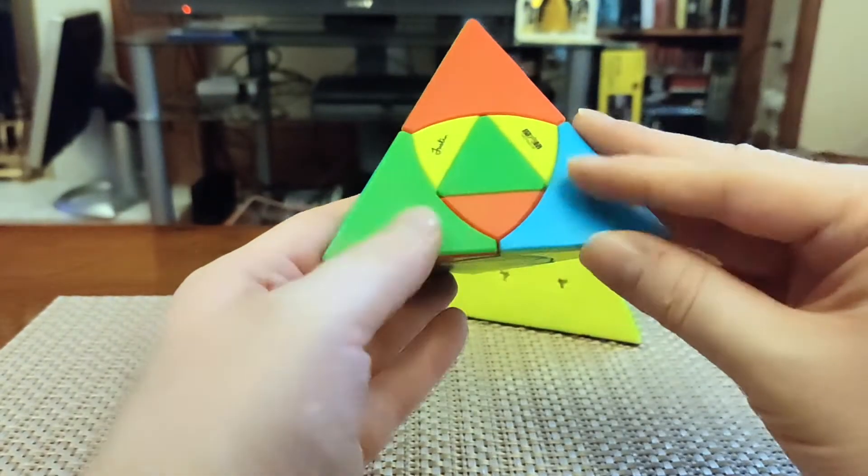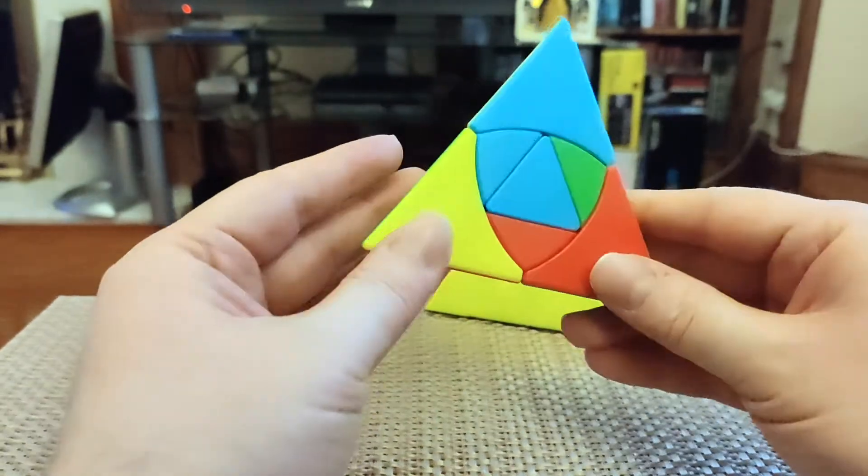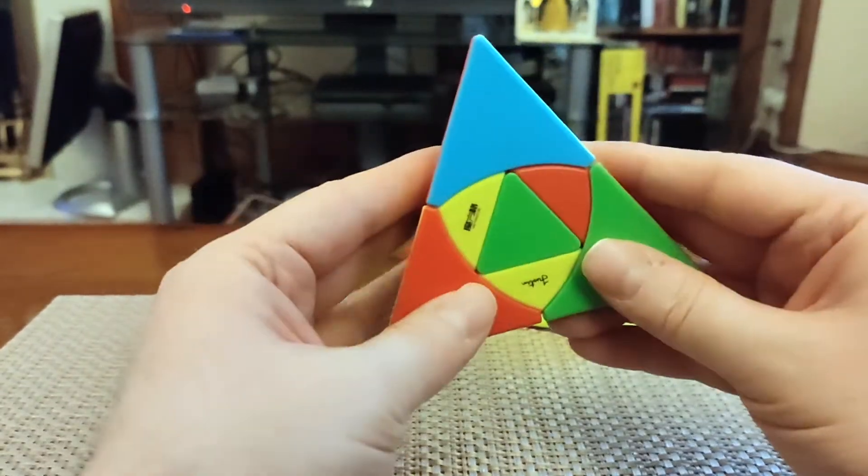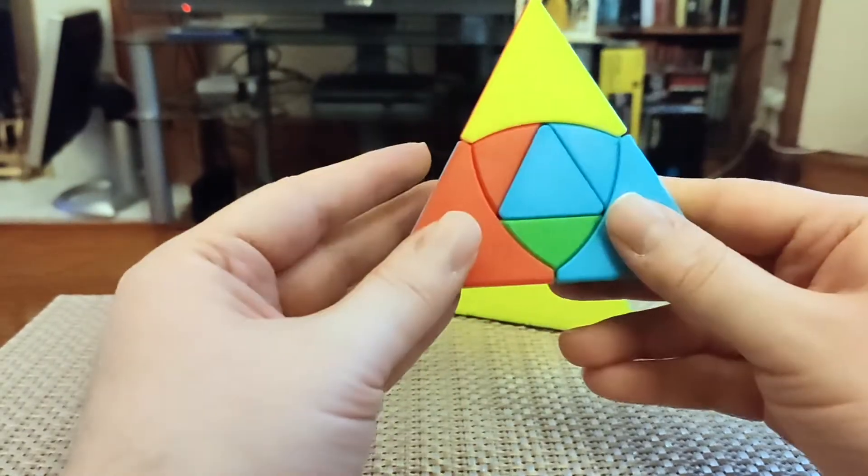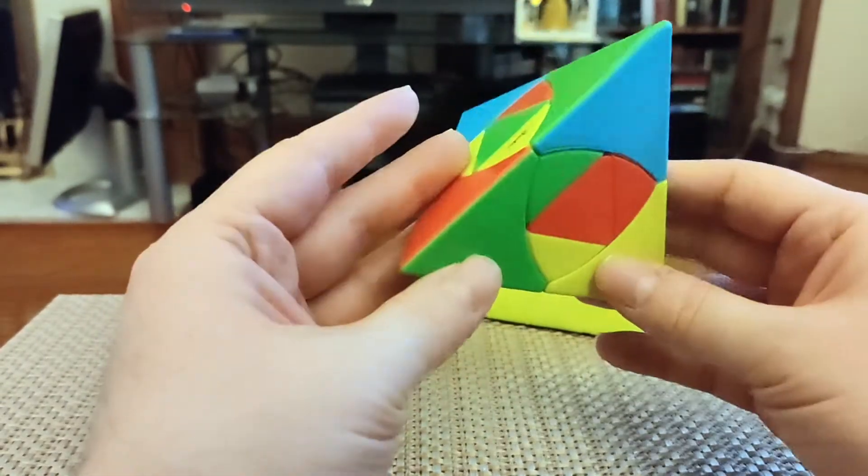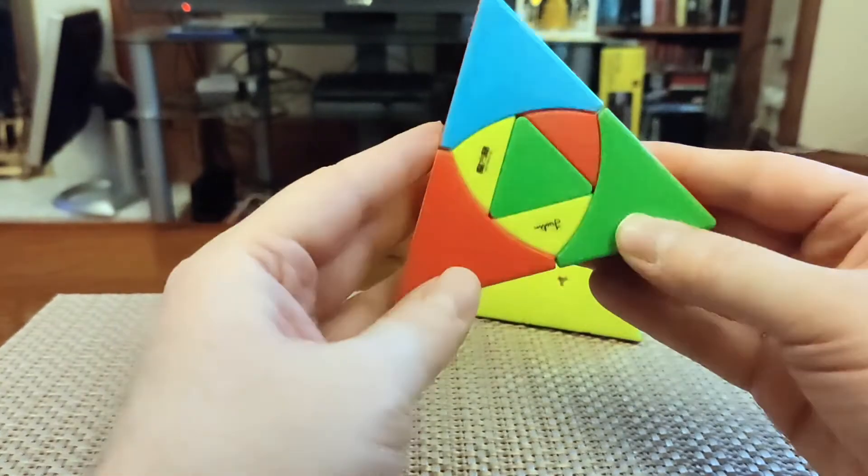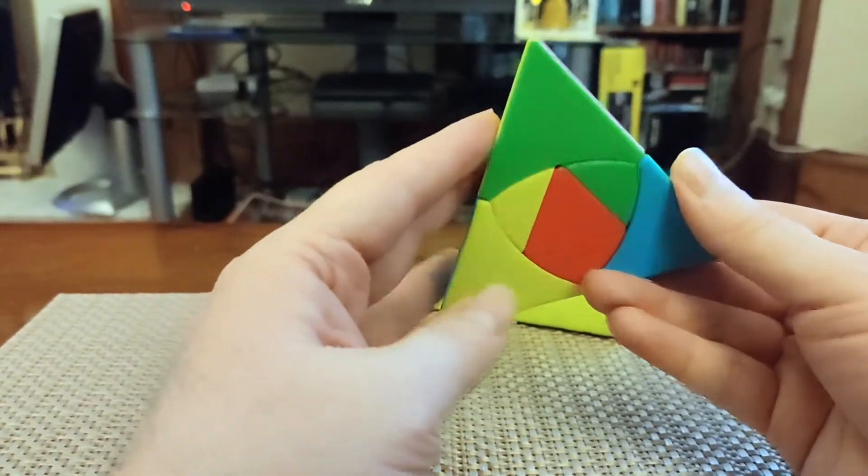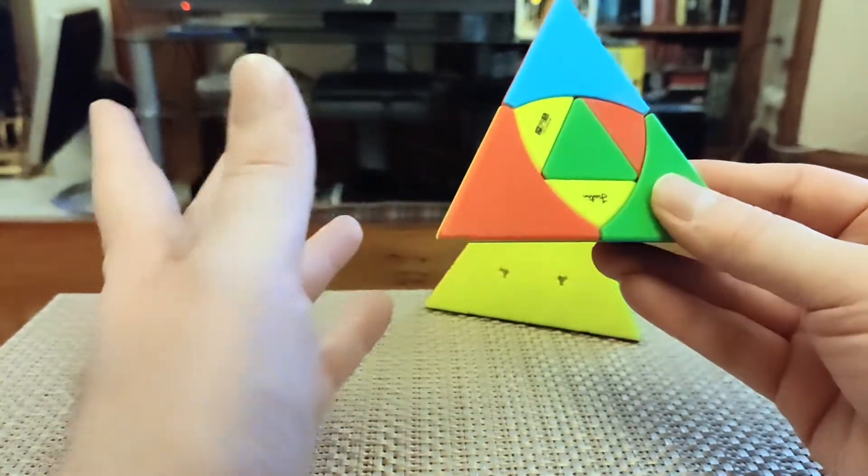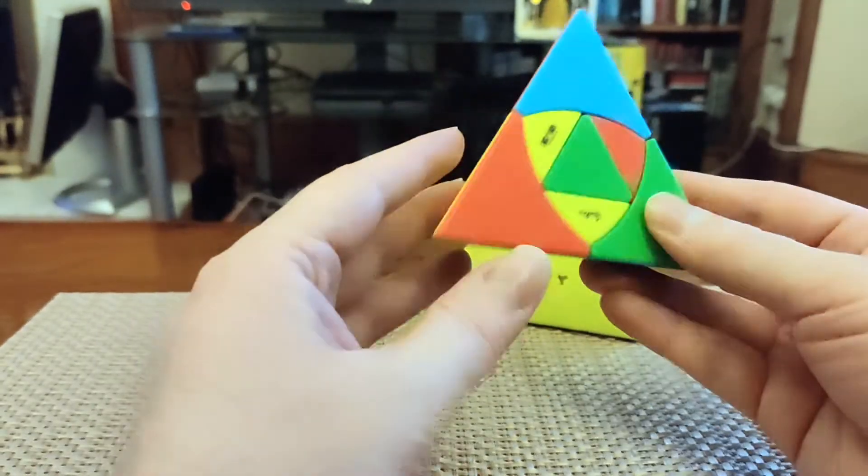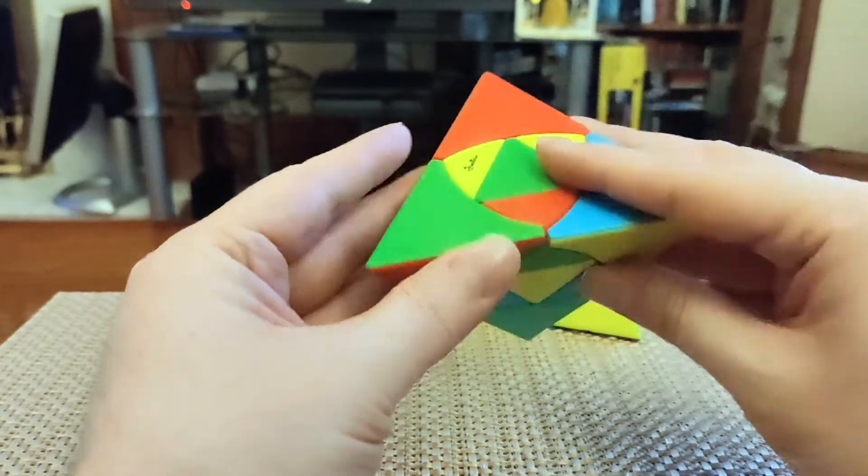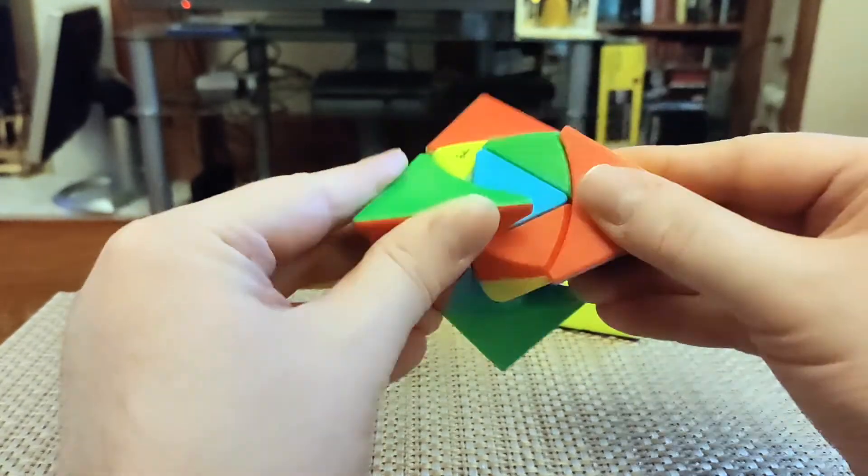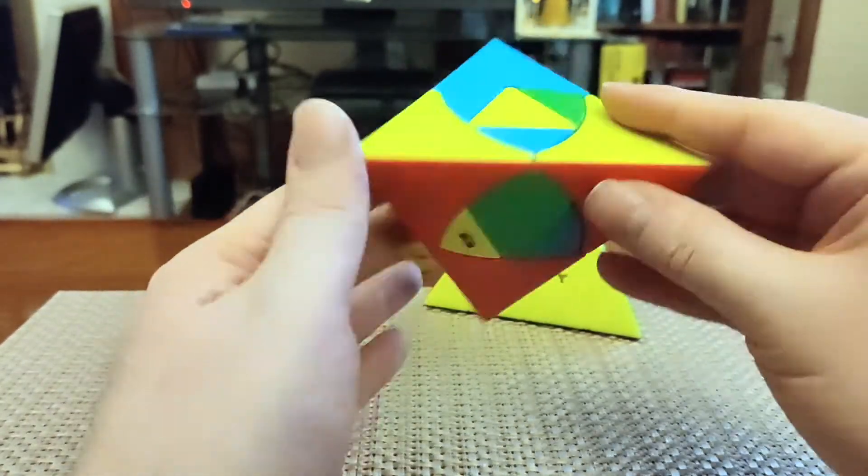Okay, welcome back. Here we are with the scrambled Duomo Pyraminx. Looks like a pretty decent scramble there. The way to solve this, it's a little bit different from a regular Pyraminx. What I tend to do is first form a bottom layer. I take essentially a layer by layer approach as one might do with a Pyraminx, but with a couple of differences in solve order. Let's see what we got here. I can make a red layer up here, so we'll start with that one.